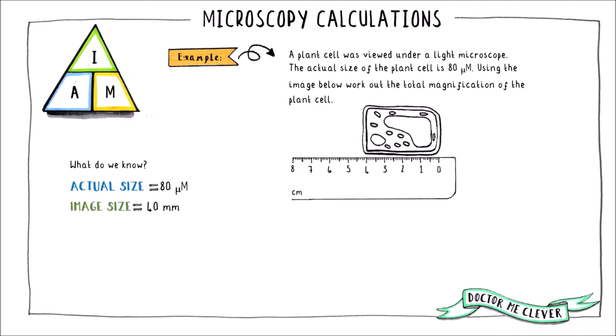So using our ruler we can measure the size of the image and we can see that it's 40 millimetres in length. The next step is to make sure that the units of the actual size and the image size are the same. And we can see that one is in micrometres and one is in millimetres at the moment. So we need to convert one of them.